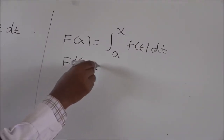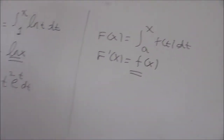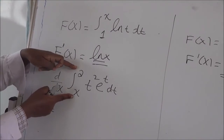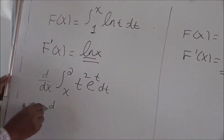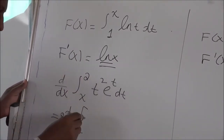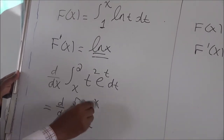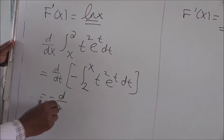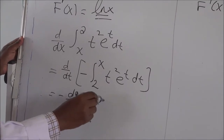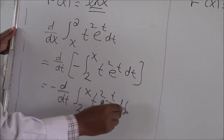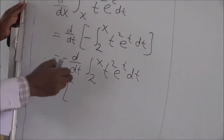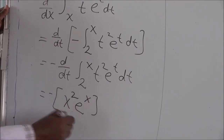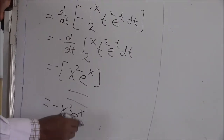In this case, the lower limit of integration is not a constant — it is a variable — but the upper limit is a constant. So we rewrite: the integral from x to 2 equals the negative of the integral from 2 to x of t² eᵗ dt. Taking the negative out, we have: negative of the derivative with respect to x of the integral from 2 to x of t² eᵗ dt. Applying FTC1, the derivative is simply replacing t by x, giving x² eˣ times negative 1 — that is, minus x² eˣ.